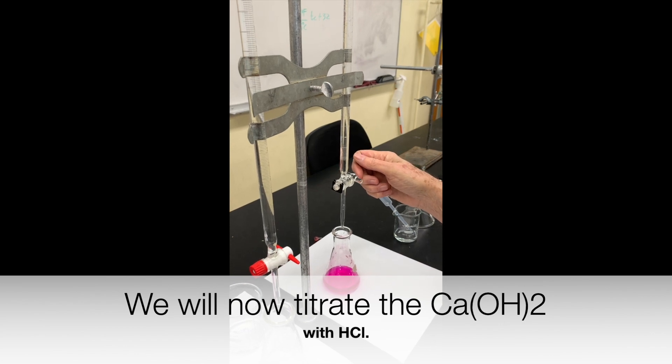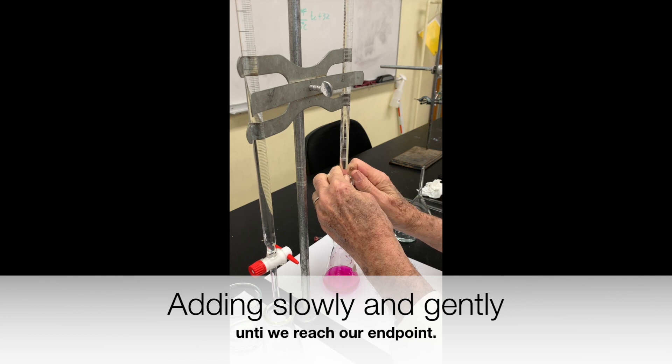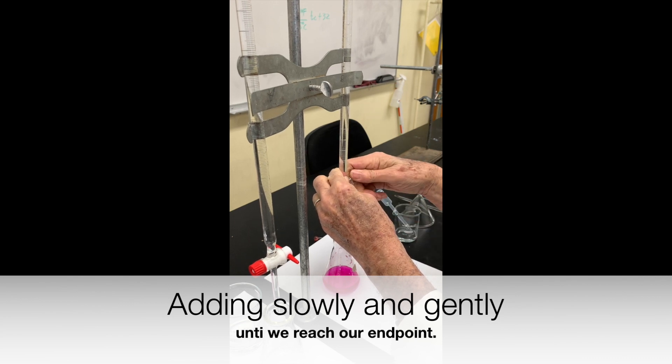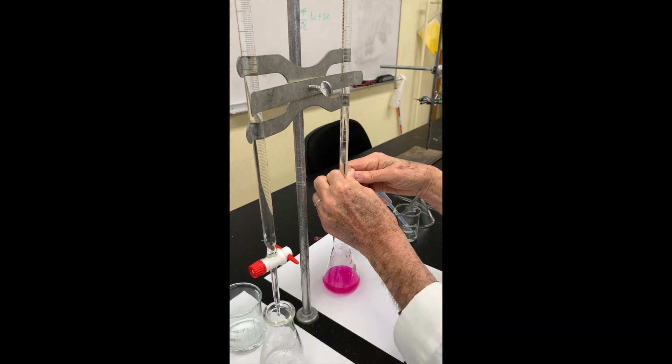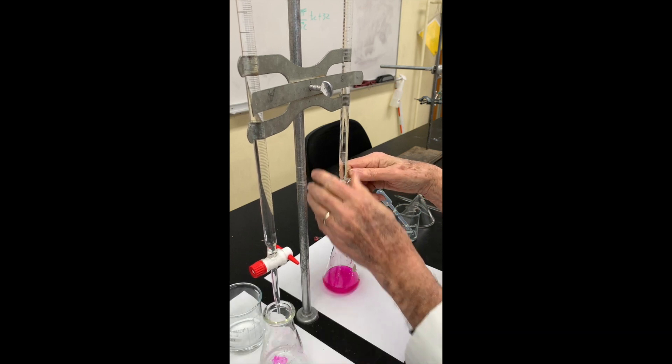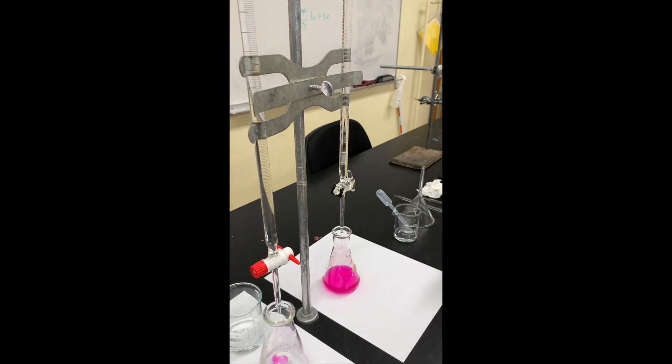We will now titrate the calcium hydroxide with hydrochloric acid, adding slowly and gently until we reach our endpoint, going for a faint pink.